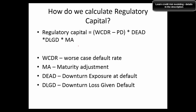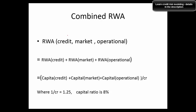How do we calculate regulatory capital? The formula uses: WCDR (worst-case default rate), MA (maturity adjustment), EAD (downturn exposure at default), and DLGD (downturn loss given default). Combining these in the formula gives you regulatory capital. The combined risk-weighted asset is simply the addition of risk-weighted assets for each type of risk: credit, market, and operational.